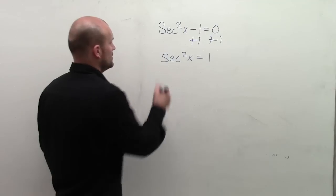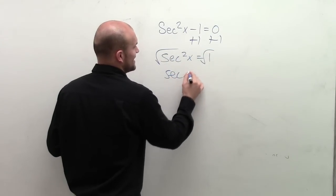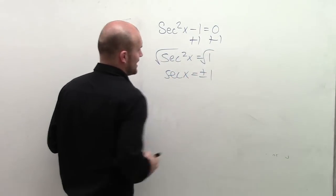Now, to undo the squaring, I'm going to take the square root of both sides, and I get secx = ±1.